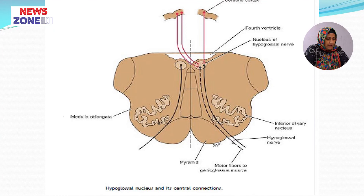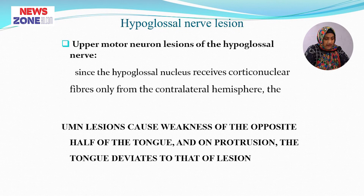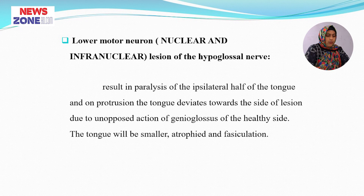This picture shows the hypoglossal nucleus and the hypoglossal nerve. In upper motor neuron lesion of the hypoglossal nerve, since the nucleus receives corticonuclear fibres only from the contralateral hemisphere, a unilateral lesion causes weakness of the opposite half of the tongue and on protrusion the tongue deviates to the side of the lesion. In lower motor neuron lesion — nuclear and infranuclear lesions — there is paralysis of the ipsilateral half of the tongue, and on protrusion the tongue deviates towards the side of the lesion due to unopposed action of the genioglossus of the healthy side. The tongue will be smaller, atrophied, and fasciculations occur within the tongue.